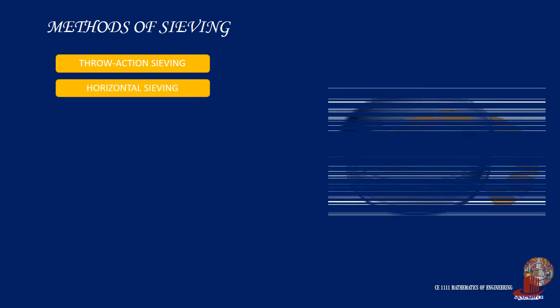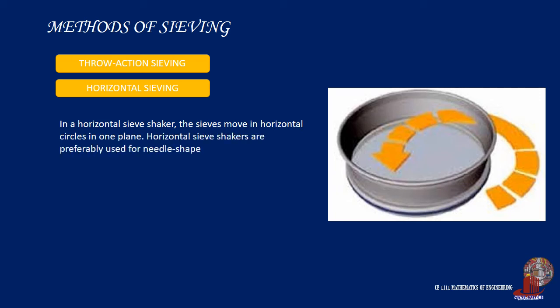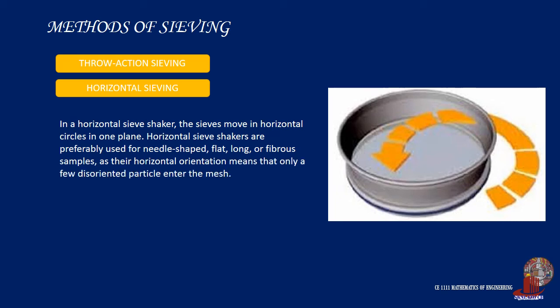In horizontal sieving, the sieve stacks move in horizontal circles in a plane. Horizontal sieve shakers are preferably used for needle-shaped, flat, long, or fibrous samples, as their horizontal orientation means that only a few disoriented particles enter the mesh, so the sieve does not block as quickly. The large sieving area enables the sieving of large amounts of sample, as encountered in the particle size analysis of construction materials and aggregates.